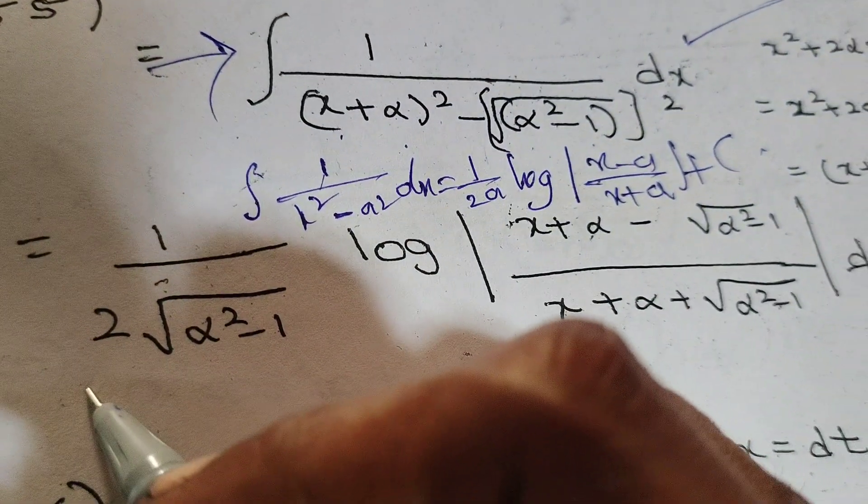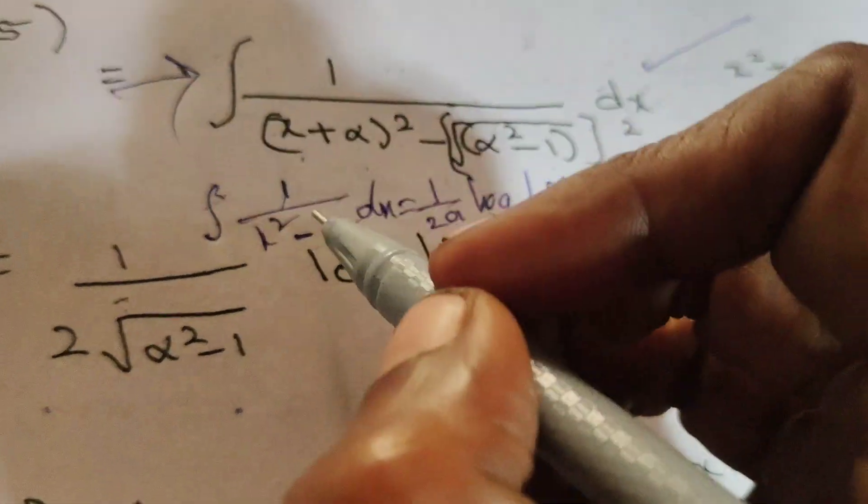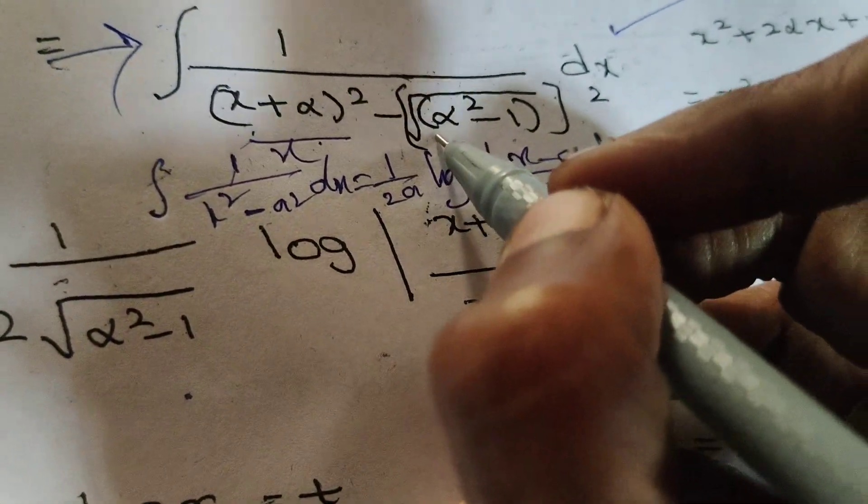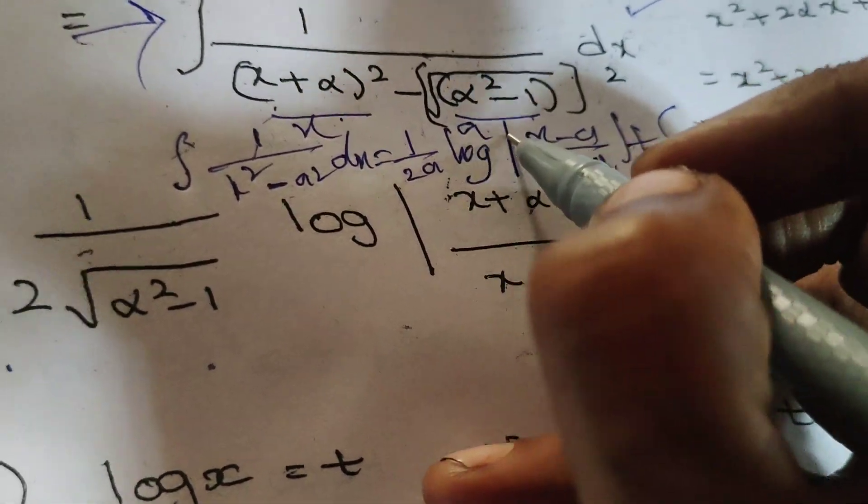Look here, 1 by 2a. Here, x means x plus alpha, a means alpha square minus 1.